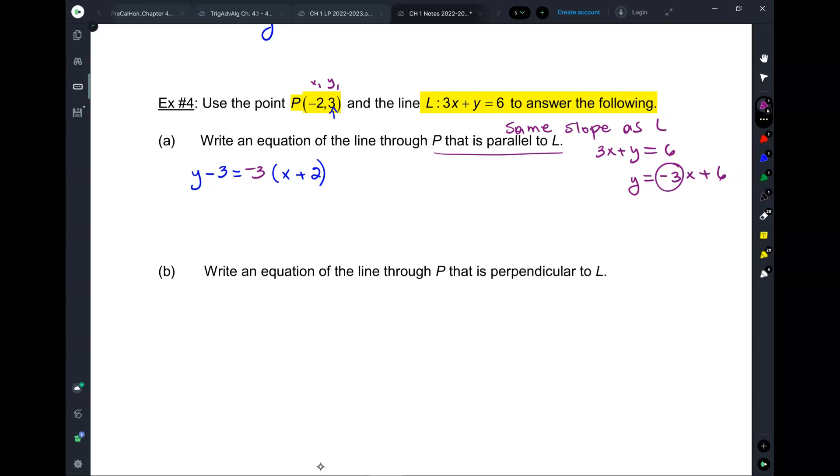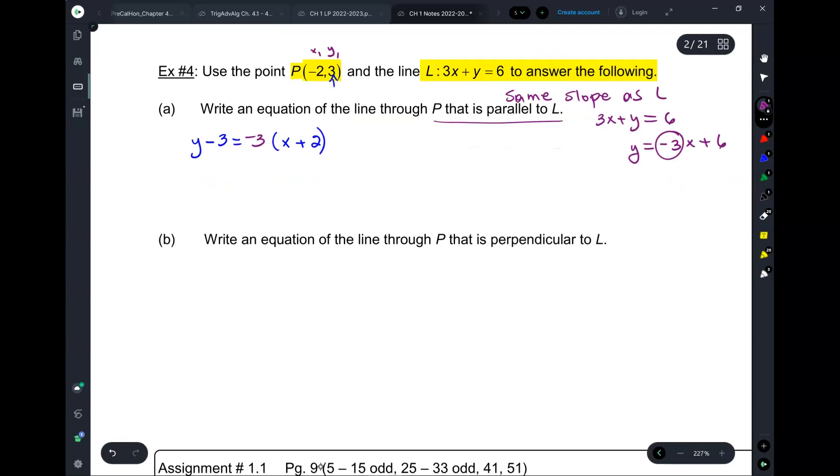Would b be y minus 3, equals 1 third, and then x plus 2? Did you just switch to show? Oh, b, yes. Okay, so, the perpendicular, m equals how much? M equals how much? M equals 1 third. 1 third. Positive 1 third, correct, because it's the negative reciprocal. So, then, this is basically the same. All you change is this 1 third.